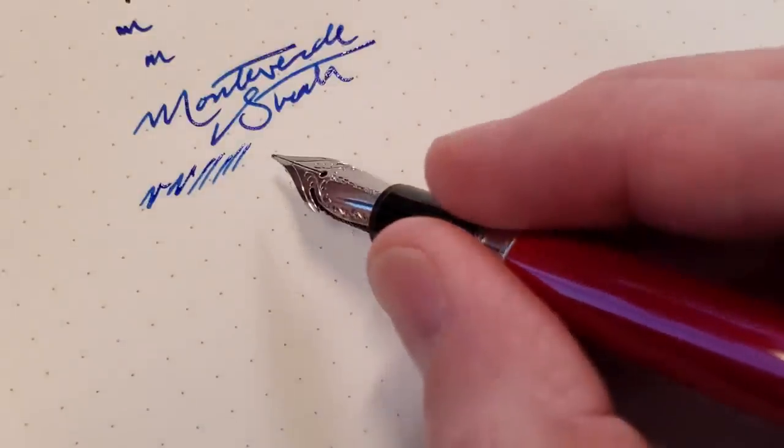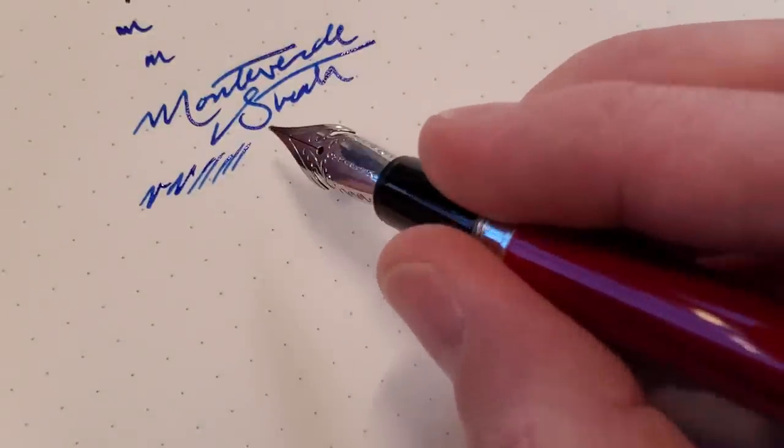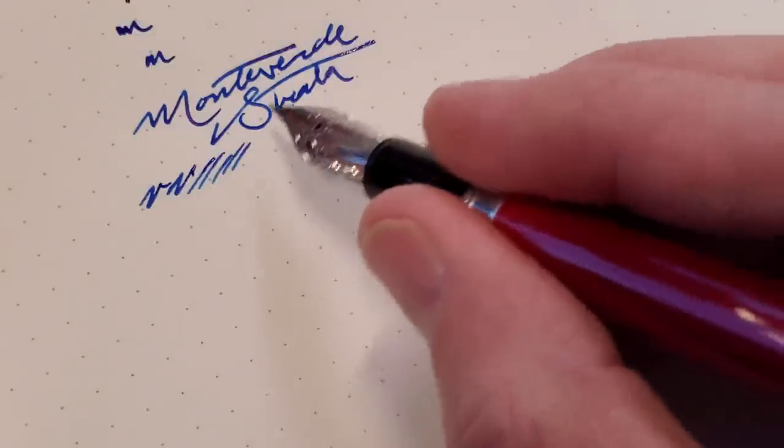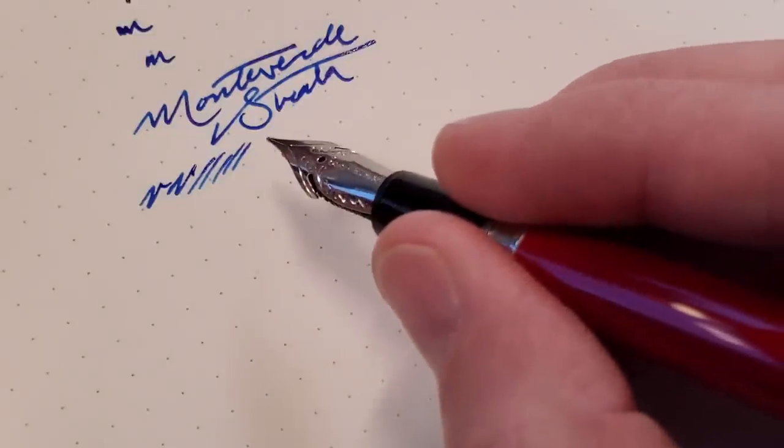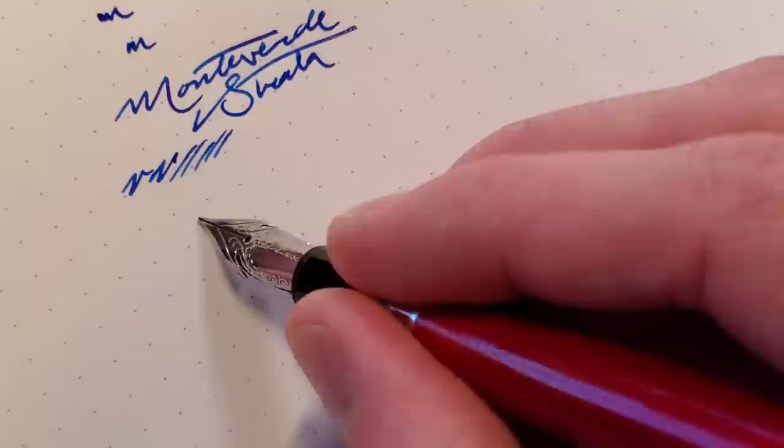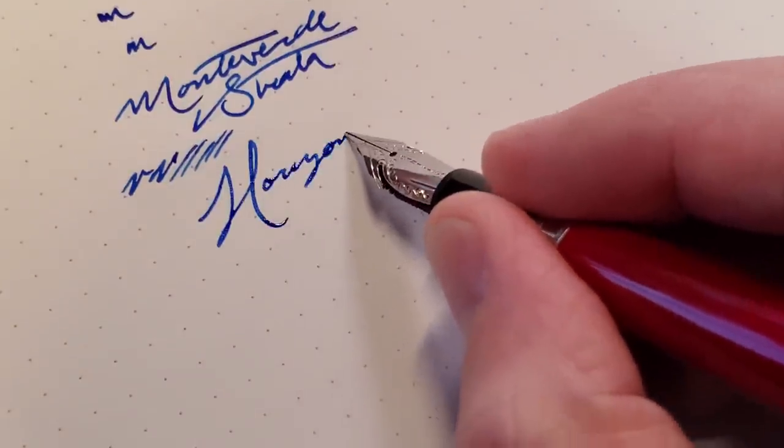But the line width is really going to depend on how wet your ink is as well. I used Noodler's Black before this and it was way thicker than this. This is Monteverde Horizon Blue.